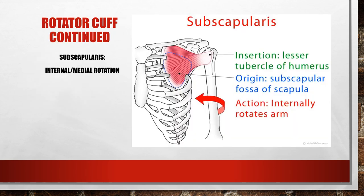The subscapularis performs internal and medial rotation of the shoulder. Its origin is on the subscapular fossa and its insertion is on the lesser tubercle of the humerus. It originates medially and anteriorly, attaches to the anterior-lateral aspect of the upper humerus at the lesser tubercle, and when it contracts it rotates the humeral head internally.